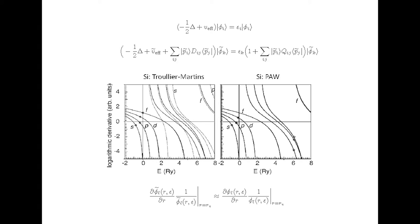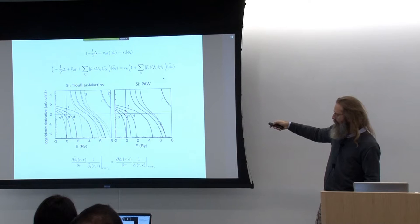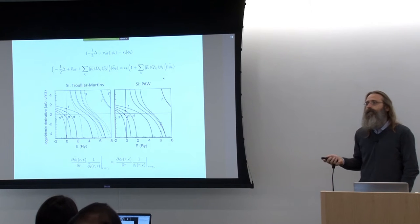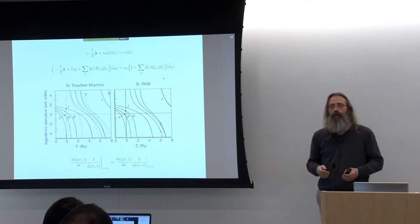This is a not very modern pseudopotential theory. The solid lines represent the logarithmic derivatives for the all-electron problem, and the dotted lines are the logarithmic derivatives for the pseudized version — the Trullier-Martin pseudopotentials. We see large deviations when we move away from the valence part of the eigenenergy spectrum. Whereas the PAW method represents these scattering properties over a much larger energy range.